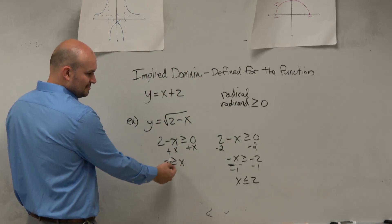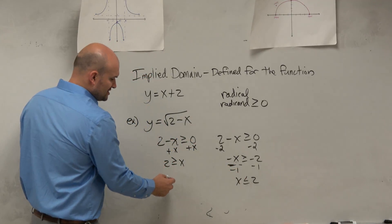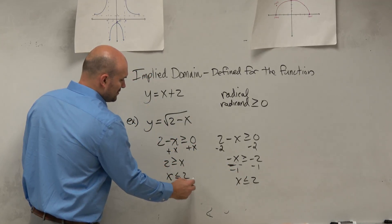These are exactly the same, wouldn't you agree? 2 is greater than or equal to x, x is less than or equal to 2. So sometimes you can just flip this to make it make more sense for you.